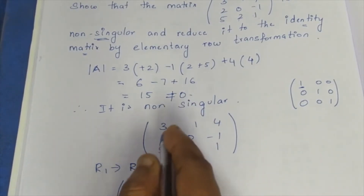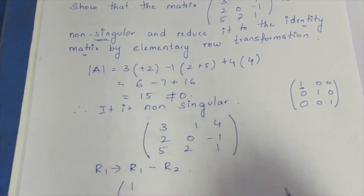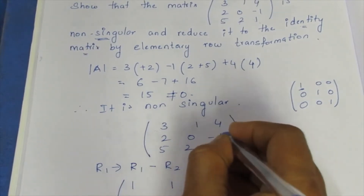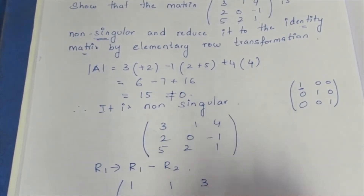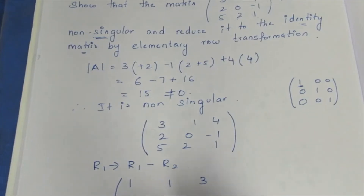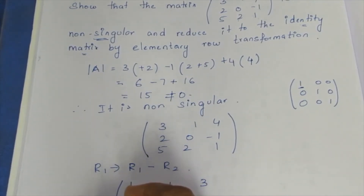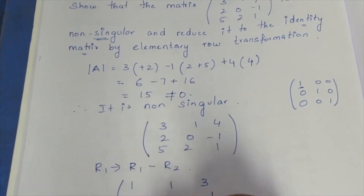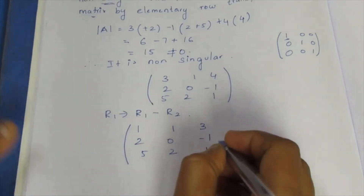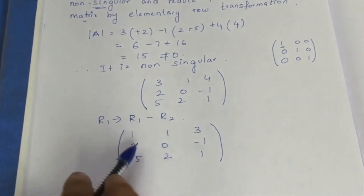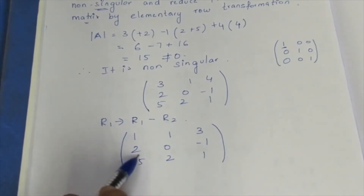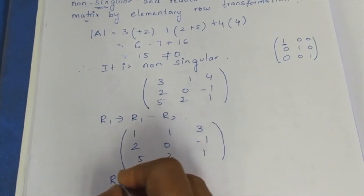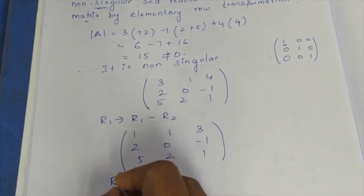We have 3 minus 2. I take the first row, here is 1. Now the matrix has 3 in one position. Now I am going to write the matrix. The first element is zero in the next step. So we proceed to row two operations.